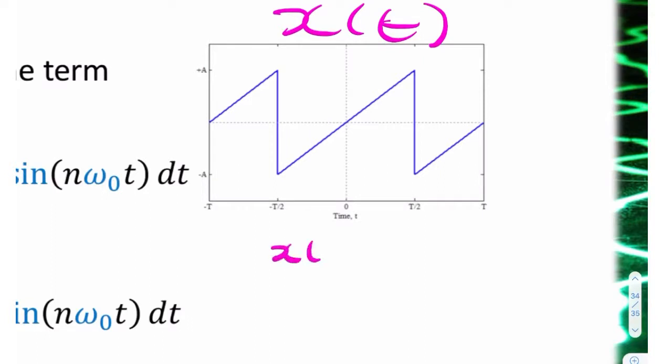We can probably just say x(t) equals t. And here, we would need the gradient. Because the general equation of a straight line is y equals mx plus c, what we need is the m, the gradient.